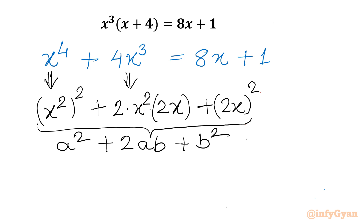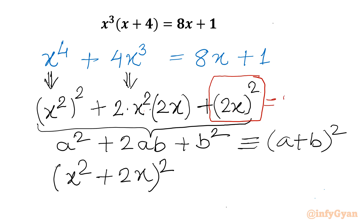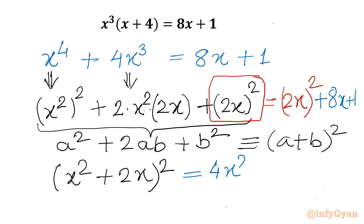So I considered b as 2x, and I need to add 2x whole square also, so that the left hand side frames the identity a squared plus 2ab plus b squared, which further I can write as a plus b whole squared — one perfect square. So it will be the square of x squared plus 2x. Since I did this extra addition, I have to add it to the RHS also. Remaining terms on RHS are plus 8x plus 1, and the extra term becomes 2x whole square, which is 4x squared plus 8x plus 1.